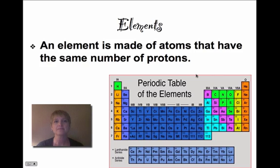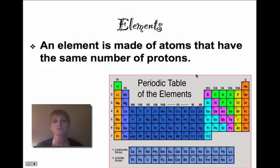Elements are made of atoms that have the same number of protons. If you've seen the periodic table of elements before, you'll notice that it goes in order. It starts with hydrogen, which has one proton. The next element is helium, which has two protons, and so on throughout the entire chart.